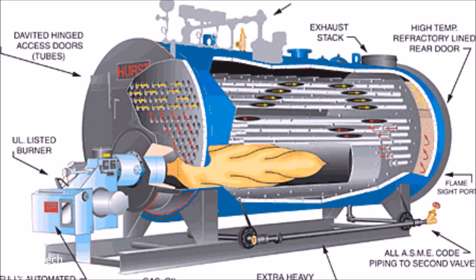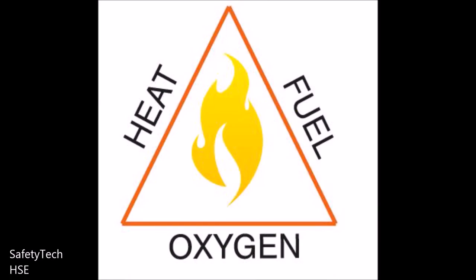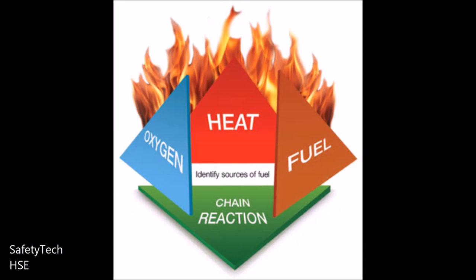A controlled combustion occurs in a heating appliance such as a furnace, boiler, or range etc. The fire triangle is the combination of fuel, heat, and oxygen. When there is a chain reaction between all these, fire will take place and become uncontrolled.